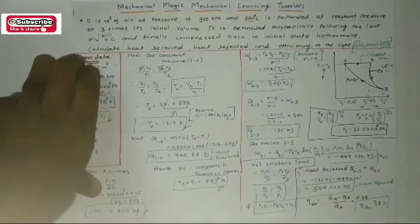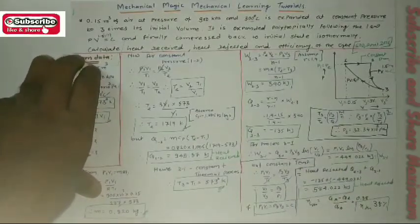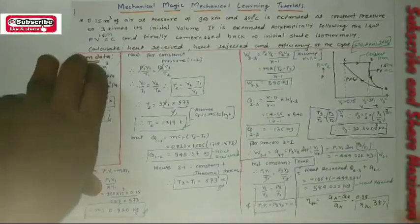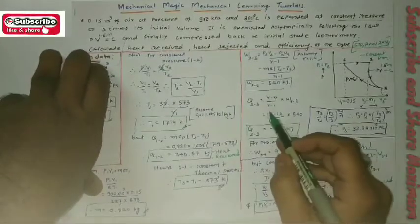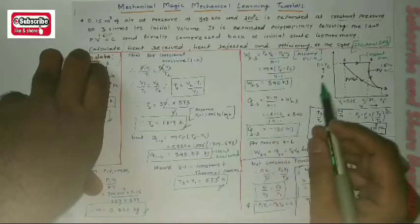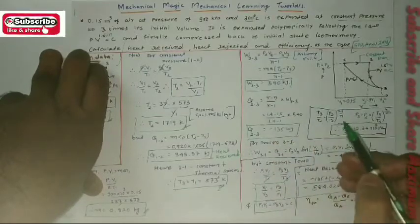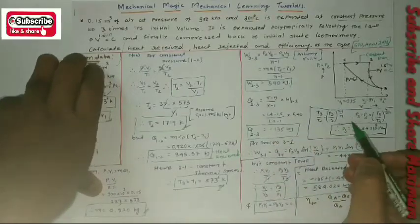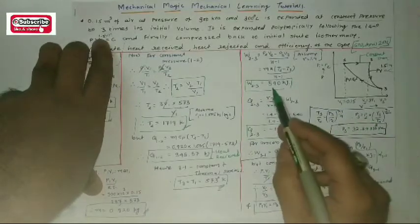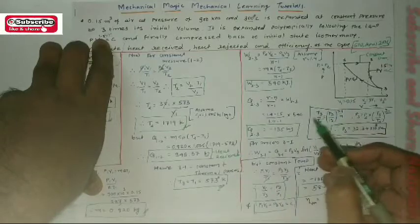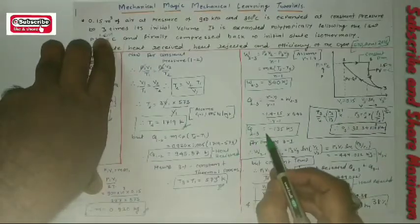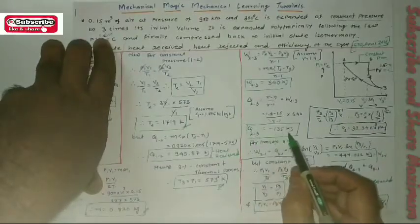For the heat in the polytropic process, the formula is Q₂₃ = [(γ − N) / (γ − 1)] × W₂₃. Substituting γ = 1.4, N = 1.5, and W₂₃ = 540 kJ, we get Q₂₃ = −135 kJ.